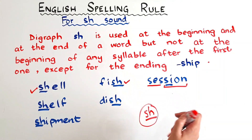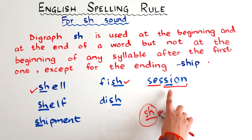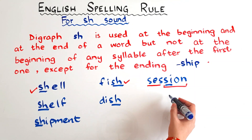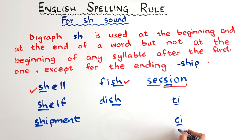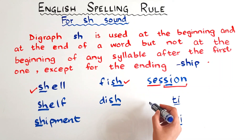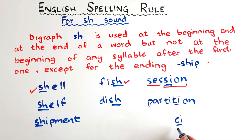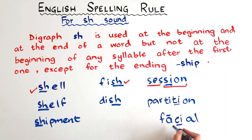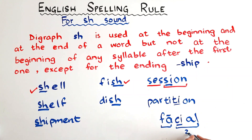If you have the SH sound in the second or third syllable, you need to write it with either S-I (SI), T-I (TI), or C-I (CI). TI also says the SH sound, as in 'partition.' CI as in 'facial.' Here, A is the open syllable. So let's mark the syllables — 'fa-cial' — the SH sound is at the beginning of the second syllable, so you cannot write it with SH.